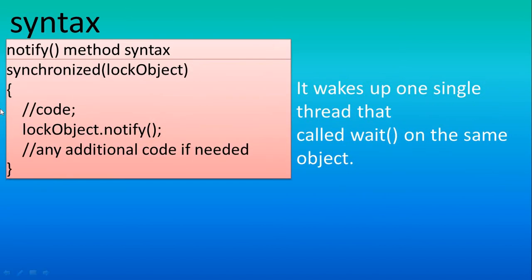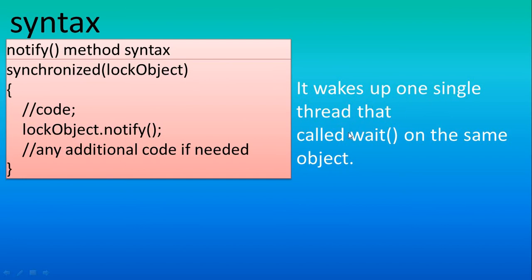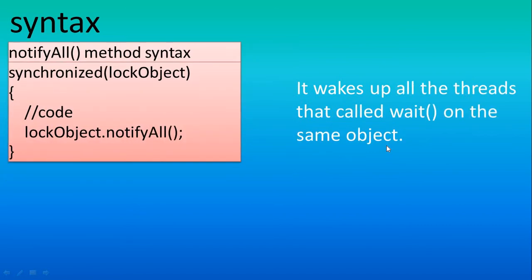The notify method gives a chance to another thread once execution is over. You also use synchronized with a lock object, write your code, and then call objectName.notify(). Once the notify method is executed, it stops its execution and gives the chance back to the thread that called wait. It is important to use the same object — notify wakes up only the single thread that called wait on the same object.